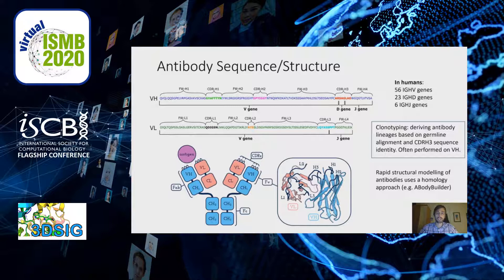A little bit about antibody sequence and structure. The region particularly relevant here is the FV region or variable domain, encoded over two variable regions: the variable heavy chain (VH) and the variable light chain (VL). We focus on the complementarity determining regions — CDRH1, H2, H3, and L1, L2, L3. As shown in the representation on the bottom left of the slide, these are loop regions most proximal to the antigen, playing a key role in determining the complementarity of an antibody for a particular pathogen.